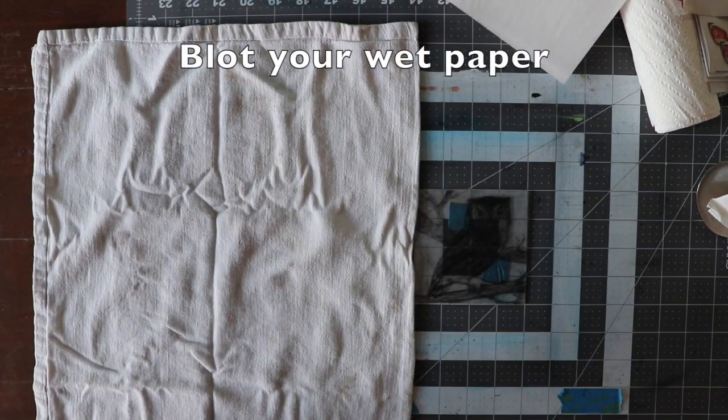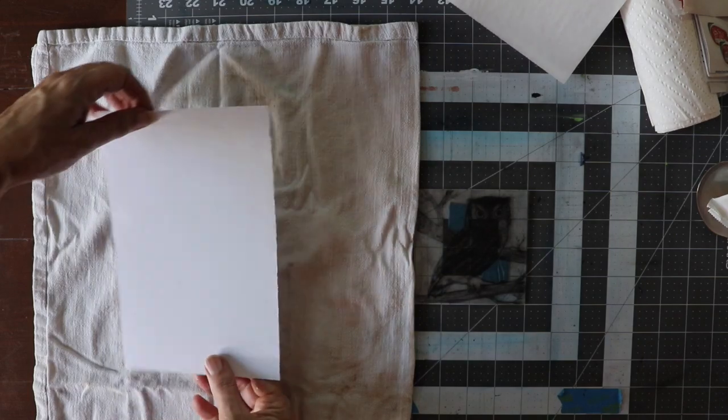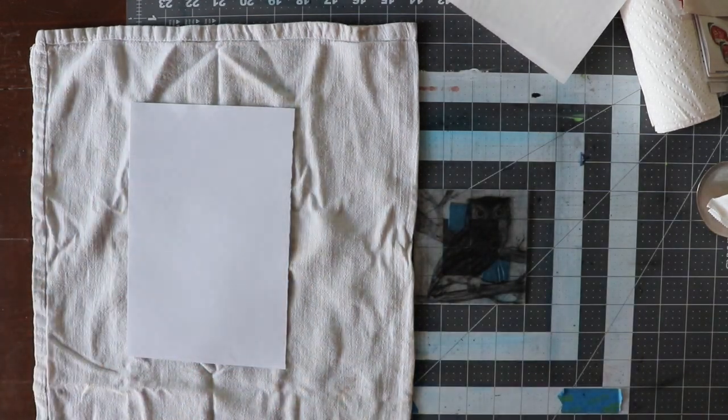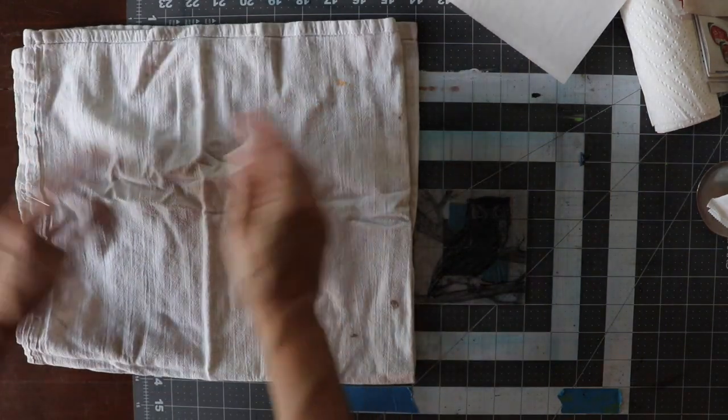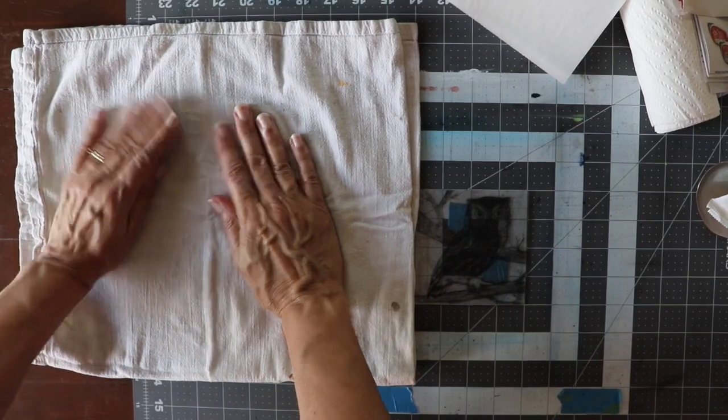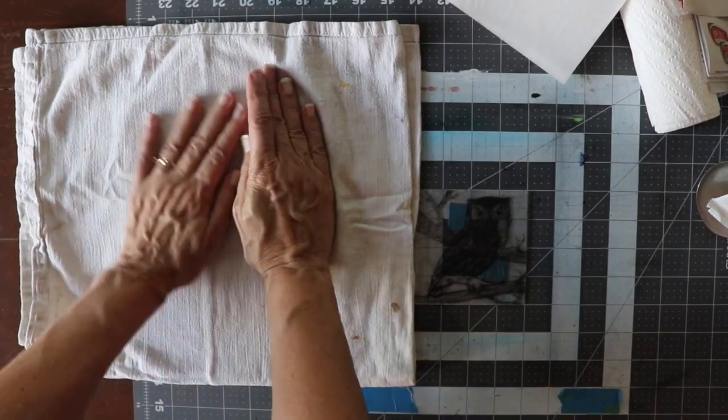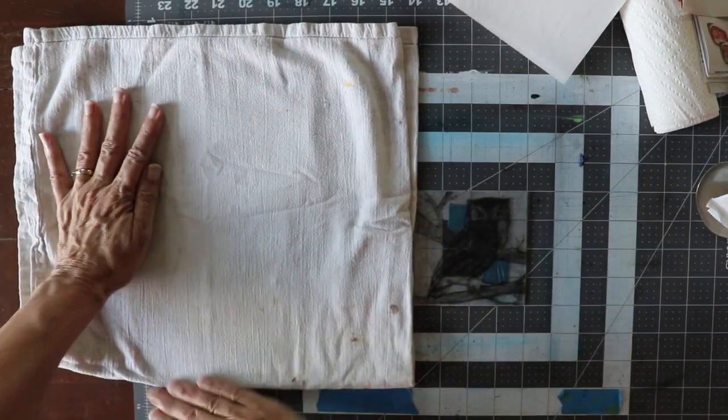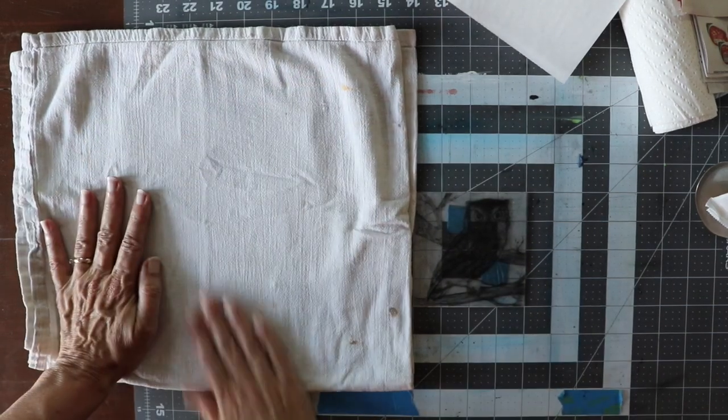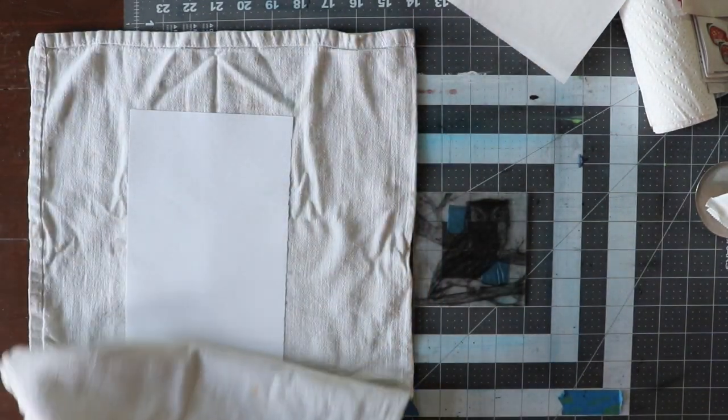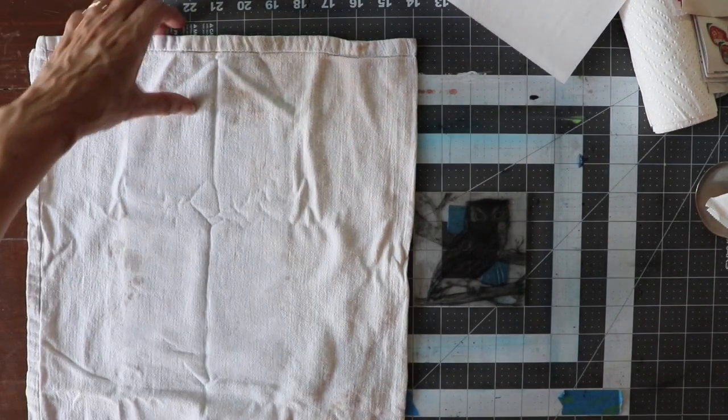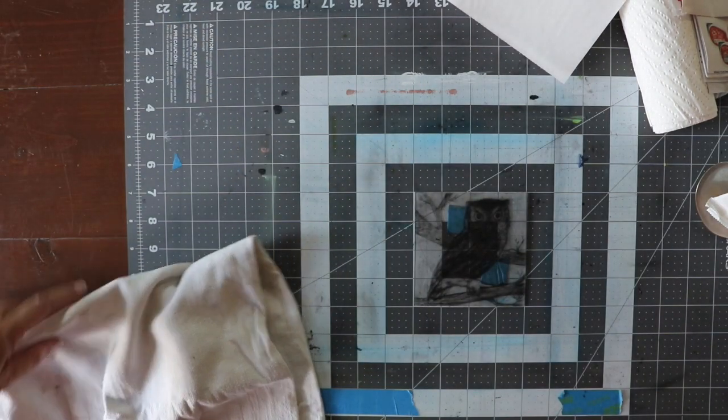Now it's time to blot your printing paper. Place your wet paper between the layers of a clean towel to remove the excess water. Your paper should be damp, but not shiny.